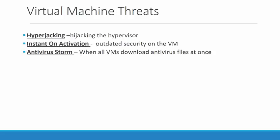An antivirus storm with VMs occurs when all the VMs try to download antivirus update files at once. Much like your policy probably specifies that antivirus be kept on them, an antivirus storm happens when a massive number of VMs try to download that data file at the same time.